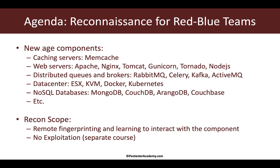Examples of this include caching servers like Memcache, web servers — of course we all have worked with Apache, but many of us may not have used NGINX, Tomcat, Gunicorn, or Tornado. After that, things like distributed queues and message brokers like RabbitMQ and Celery. In data centers, you now have Docker and Kubernetes. And then, of course, NoSQL databases and many, many other components.